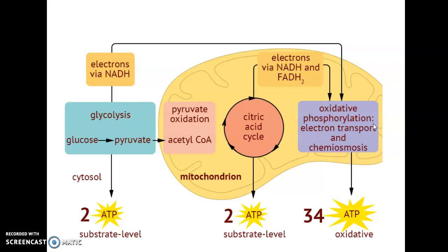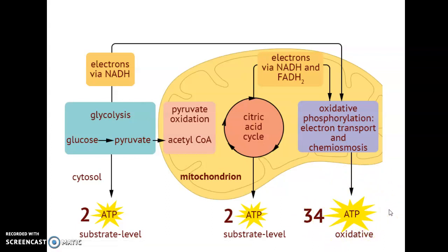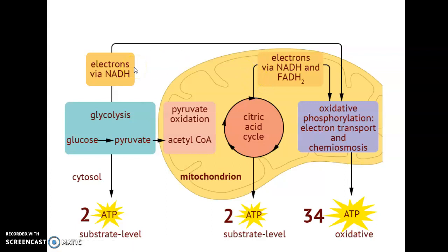Oxidative phosphorylation is broken up into two parts: we have the electron transport chain, or the ETC, and chemiosmosis. The first thing to notice in this overview diagram is the large amount of ATP generated from oxidative phosphorylation. The majority of the ATP generated in cell respiration is generated during oxidative phosphorylation. The only inputs are the electrons coming from NADH in glycolysis, as well as from NADH and/or FADH2 from the citric acid cycle.